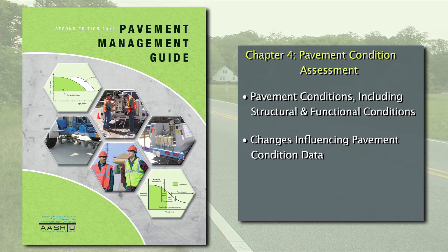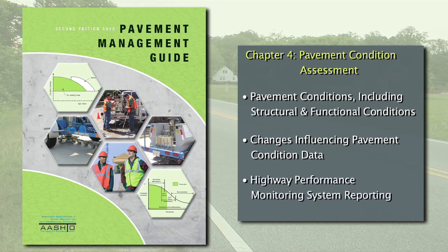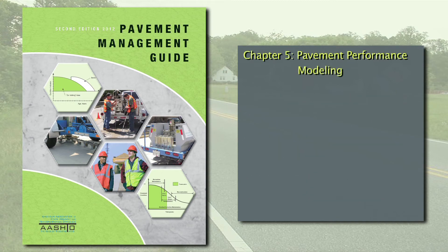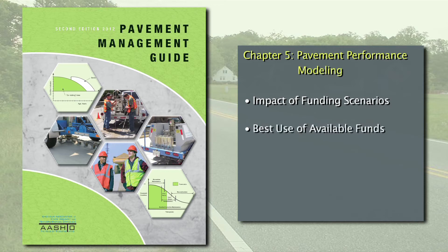This chapter also presents current changes influencing the type and frequency of pavement condition data being collected, specifically the new highway performance monitoring system reporting requirements. Chapter 5, titled Pavement Performance Modeling, introduces some of the methods used to develop pavement performance models that demonstrate the impact of different funding scenarios, determines the best use of available funds, and estimates changes in resource needs to address pavement deficiencies.